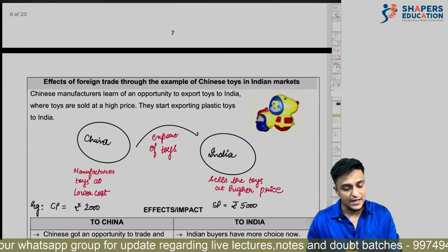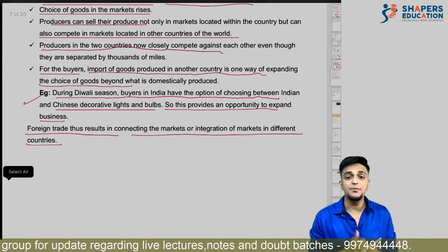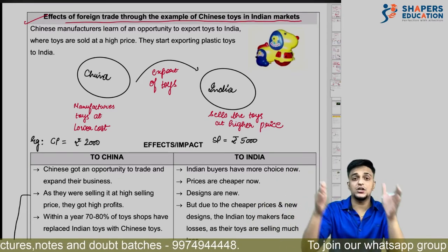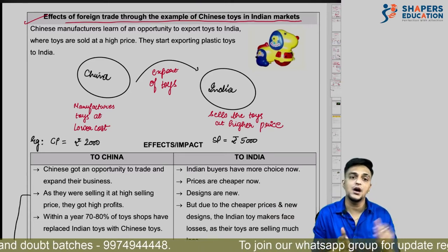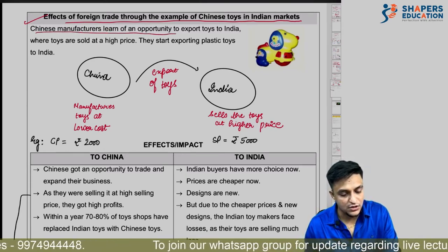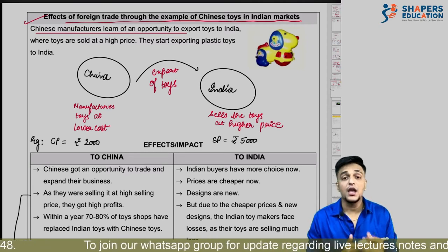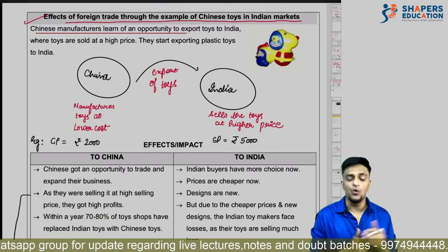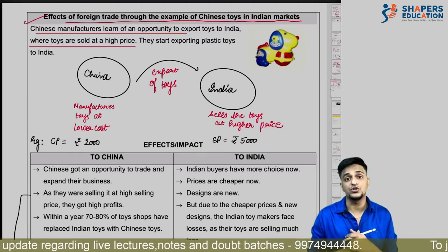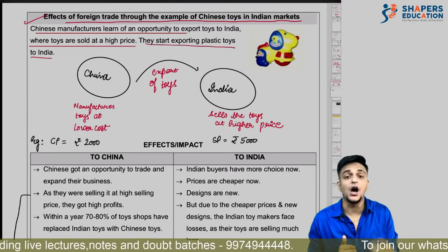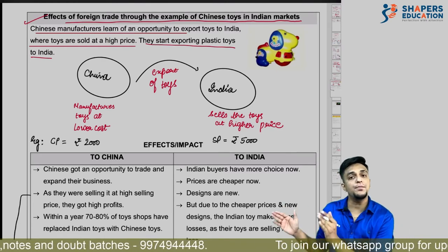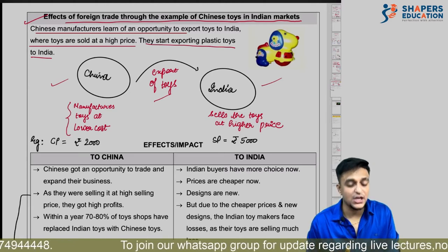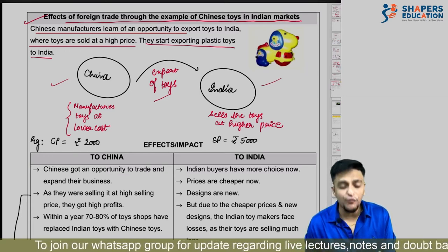Now the effect of foreign trade — example of Chinese toys in India. Chinese cheap toys in India: what effect did they have on the market for China and India? Chinese manufacturers discovered that there is a very large market in India, and if they sell their products cheaply they would make a lot of profit. They could sell toys at higher prices. Realizing this opportunity, they started exporting plastic toys to India, selling their cheap products in the Indian market.